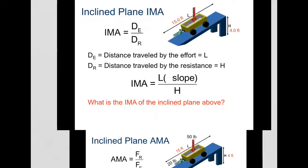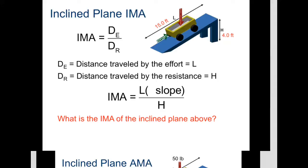Going straight through, man. Inclined plane IMA. Remember, the formula is still the same: the distance of the effort over the distance of the resistance.